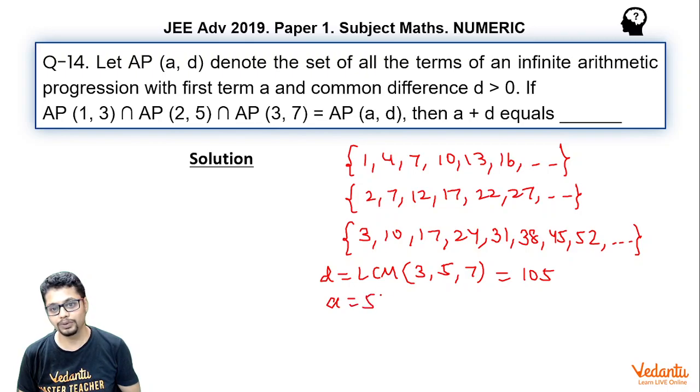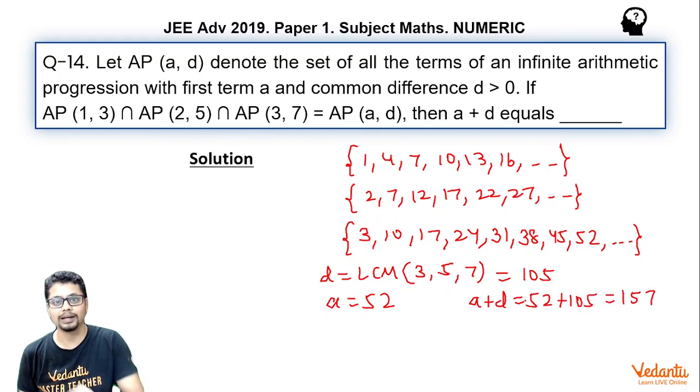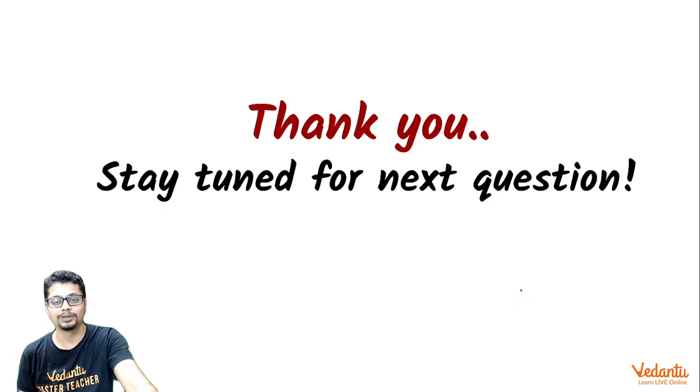So, a becomes 52 and what we want is a plus d which is 52 plus 105 which essentially becomes 157 which is our answer. Thanks for listening, stay tuned for the next question.